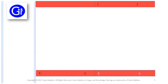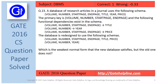Question number 23: a database of research articles in a journal uses the following schema. The schema consists of volume, number, start page, end page, title, year, and price. The primary key is volume, number, start page, and end page. The following functional dependencies exist in the schema.